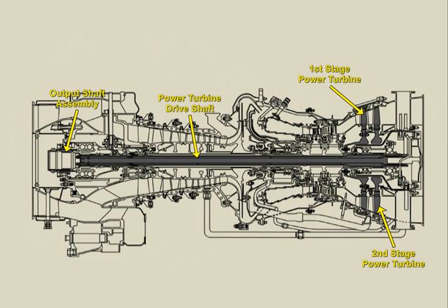The power turbine is an independent two-stage uncooled axial-flow low-pressure turbine. Power turbine rotation is induced by high-pressure air exiting the gas generator, then being directed aft to the power turbine rotors via stators. The power turbine rotors are attached to a drive shaft that extends forward through the gas generator spool and is coupled to an output shaft assembly.